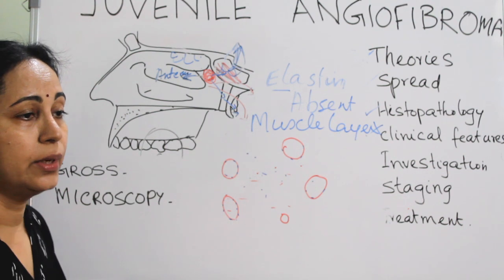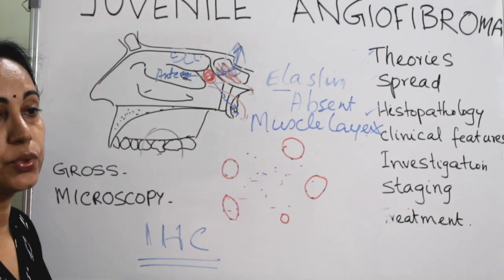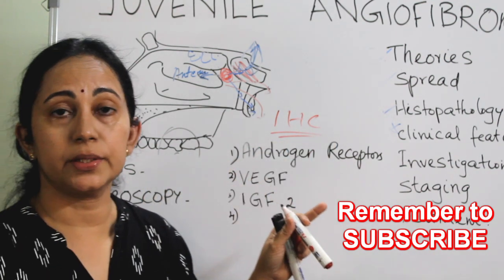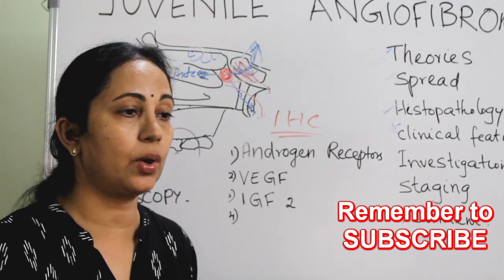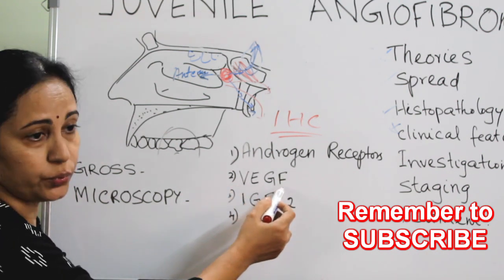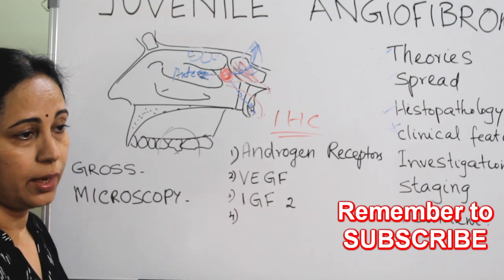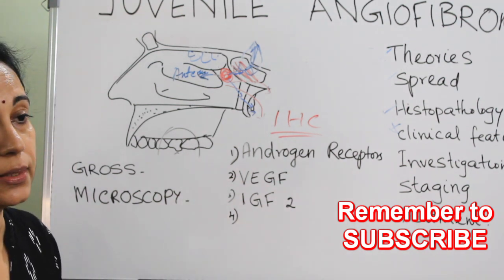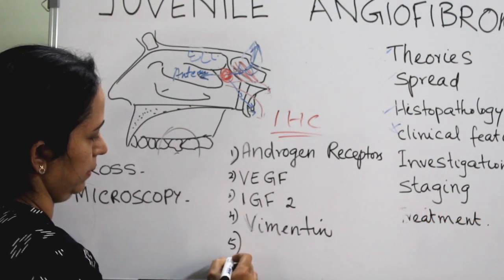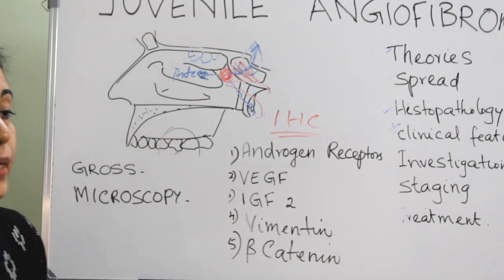Immunohistochemistry is important in the diagnosis of JNA. There is an abundance of androgen receptors in both the vascular and stromal components. Vascular endothelial growth factors (VEGF) are also expressed in both components, along with insulin-like growth factor 2 (IGF-2). Other markers include beta-catenin and others — around 14–15 IHC markers have been described.